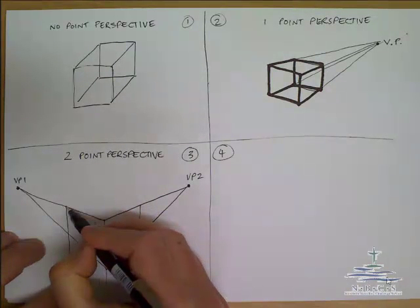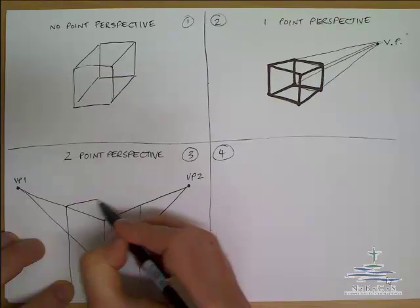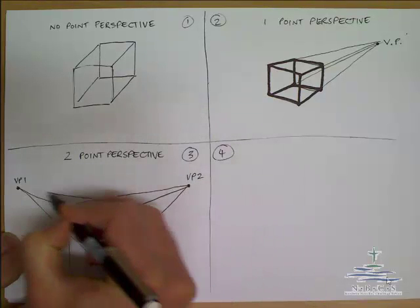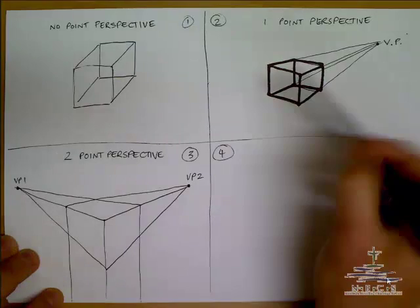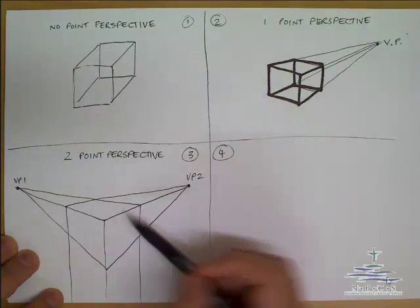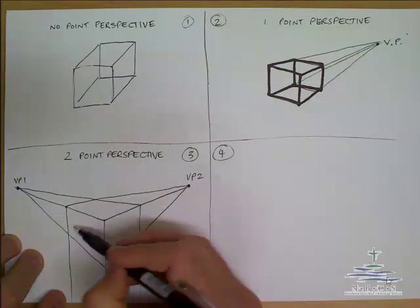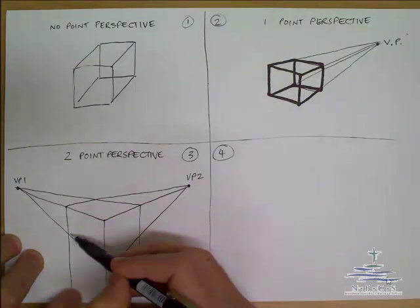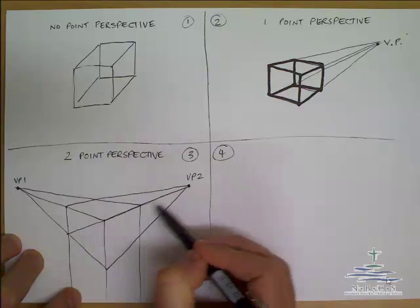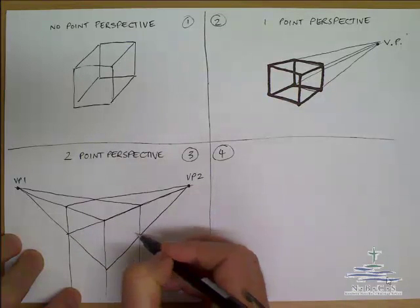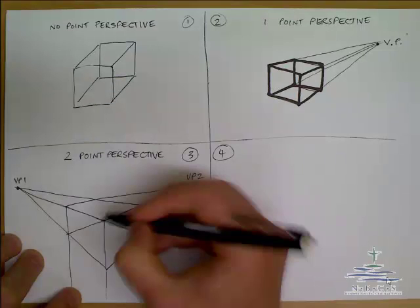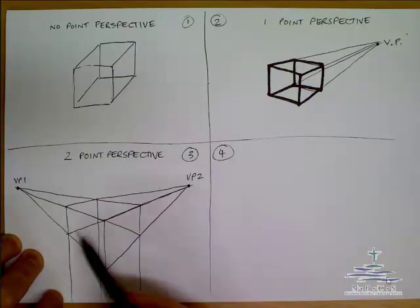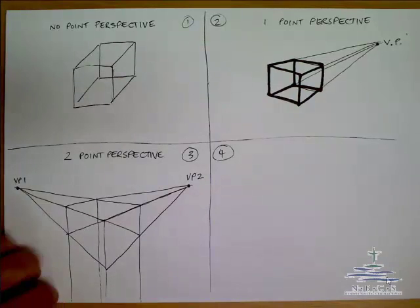I'm going to box in the top: from the corner to vanishing point 2 and from the corner to vanishing point 1. You can see how it's starting to change perspective and look more distorted. Now we make it see-through like a block of ice. Draw a line over to vanishing point 2 and to vanishing point 1, and also one down the back. They're a little bit out, but you can see our two-point perspective.